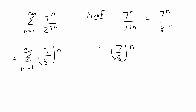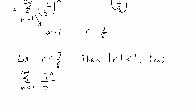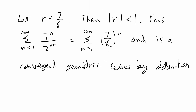After this simple simplification, we see that we have the form of a times r to the n. In this case we don't really have a coefficient a, so a is equal to 1, and our r is equal to 7 over 8. For the proof, let r equal 7 over 8. Then the absolute value of r is less than 1 because the absolute value of 7 over 8 is just 7 over 8, which is less than 1. Therefore the sum from n equal to 1 to infinity of 7 to the n over 2 to the 3n equals the sum from n equal to 1 to infinity of 7 over 8 to the n, which is by definition a convergent geometric series.